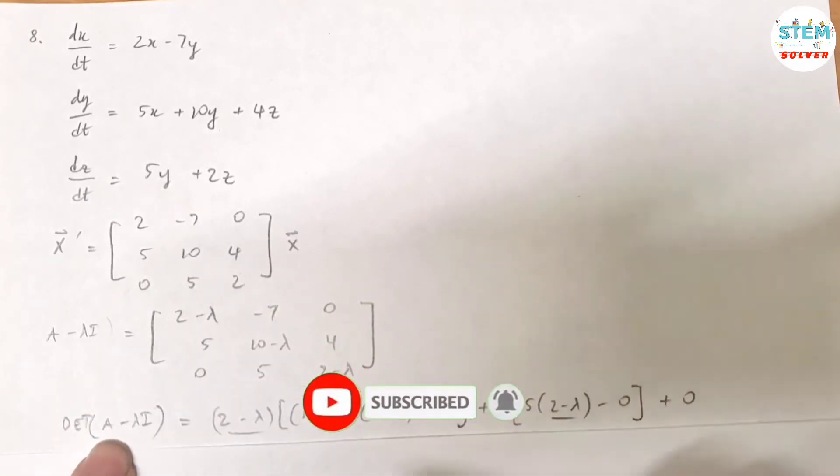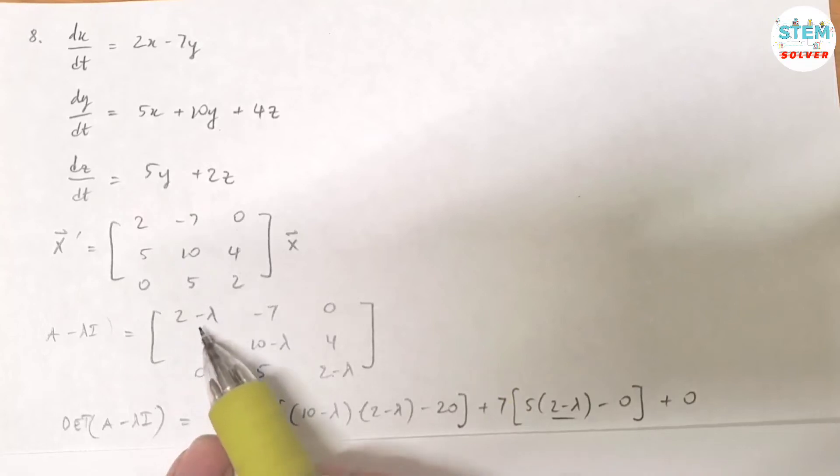Then you find the determinant of it. That gives you 2 minus lambda, I'm gonna go across the row. So 2 minus lambda times 10 minus lambda times 2 minus lambda, minus 4 times 5.